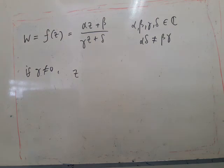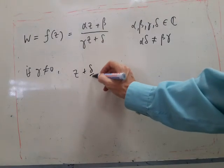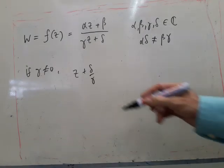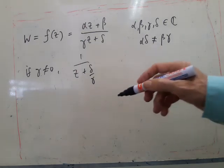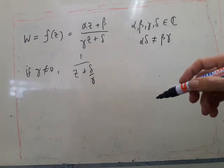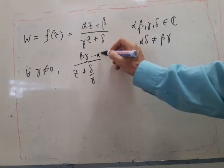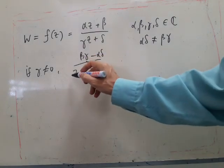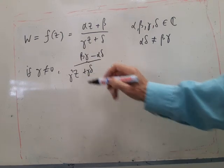If I translate z by delta over gamma, and then do an inversion, and then scale by beta gamma minus alpha delta over gamma squared, so multiply bottom by gamma squared. So that's gamma squared and gamma on the bottom.